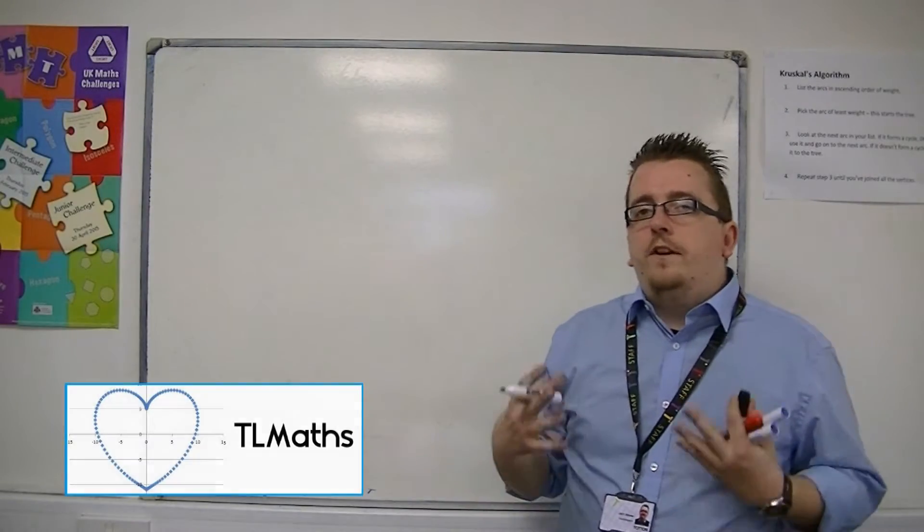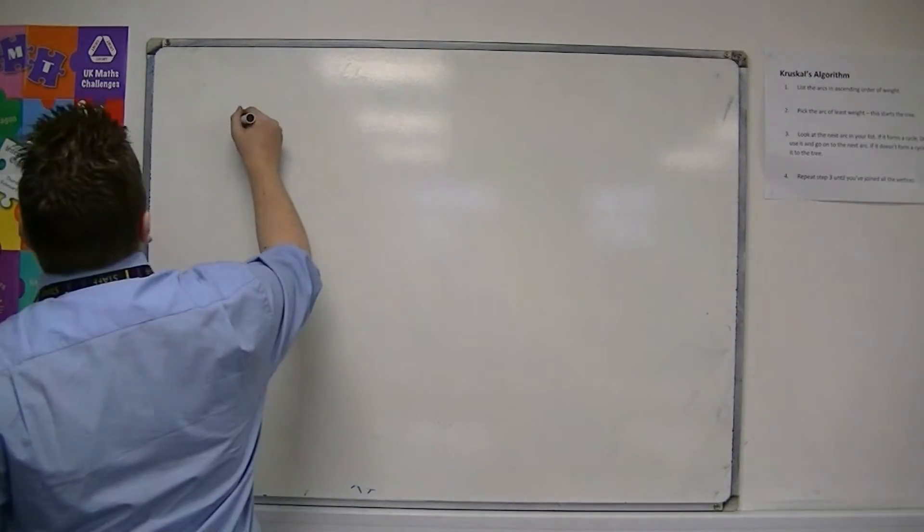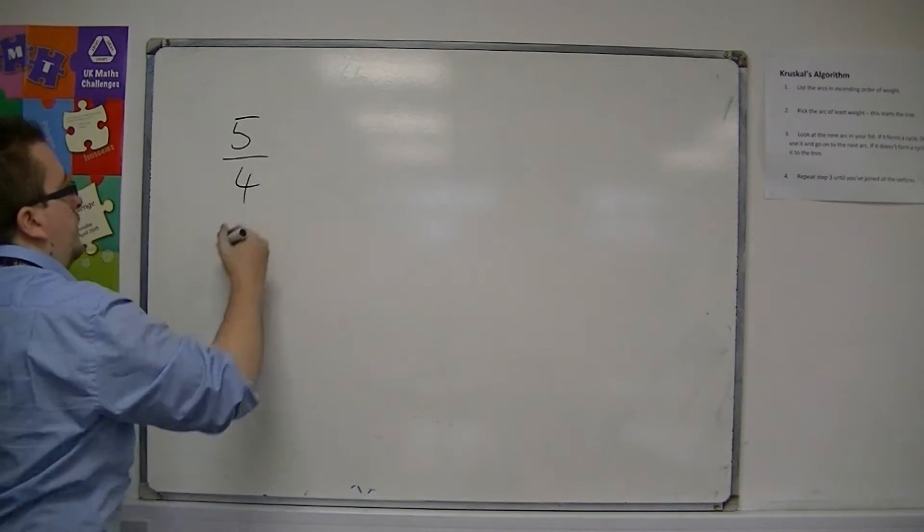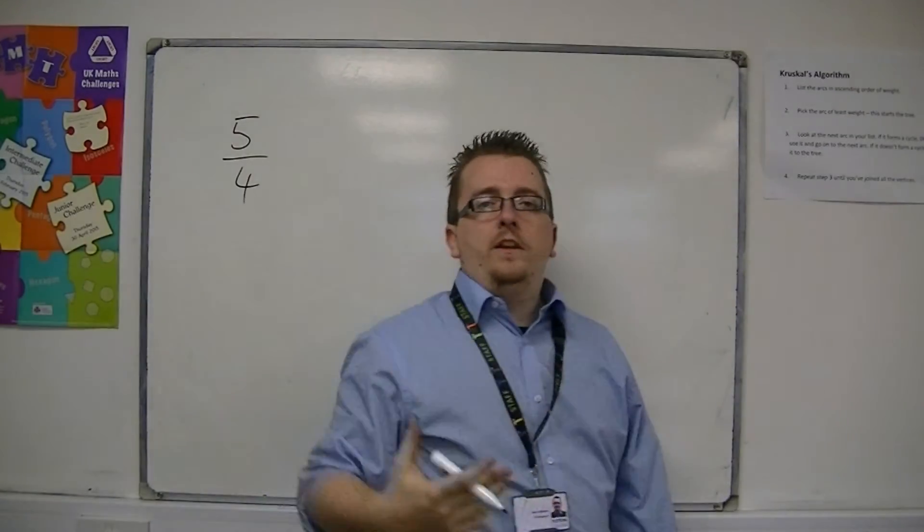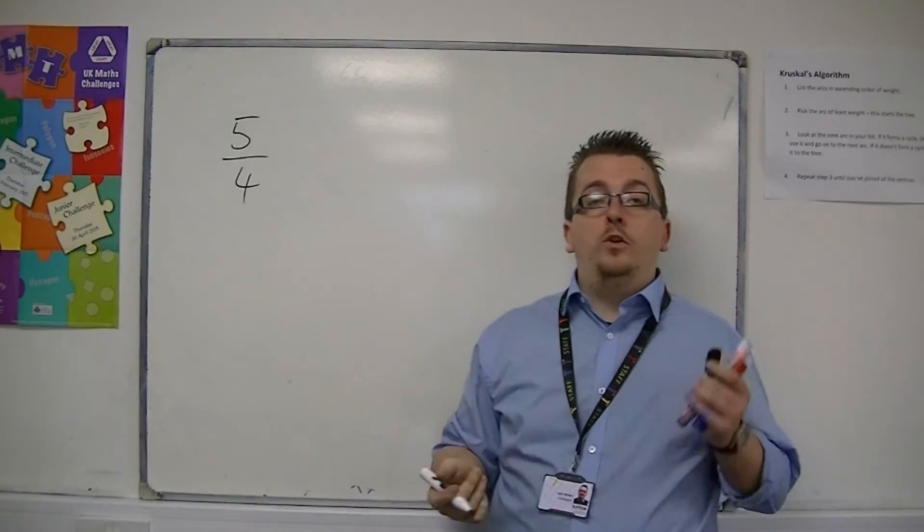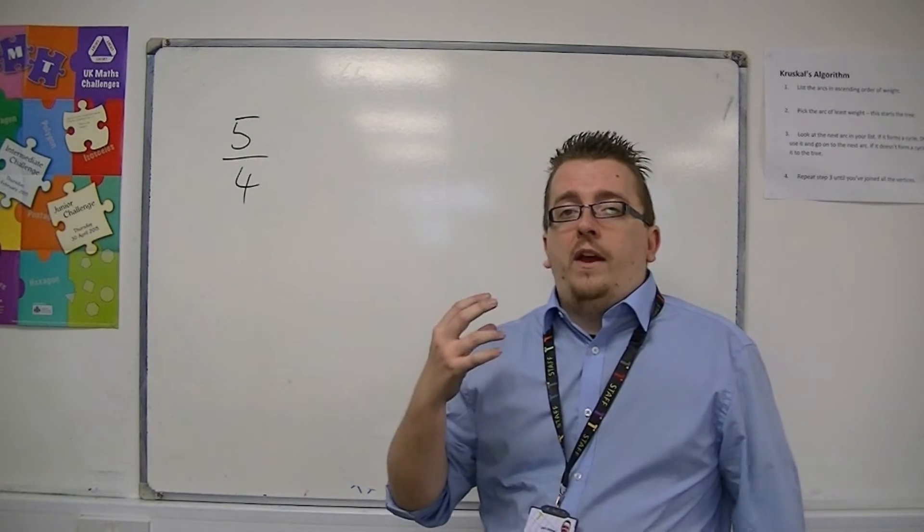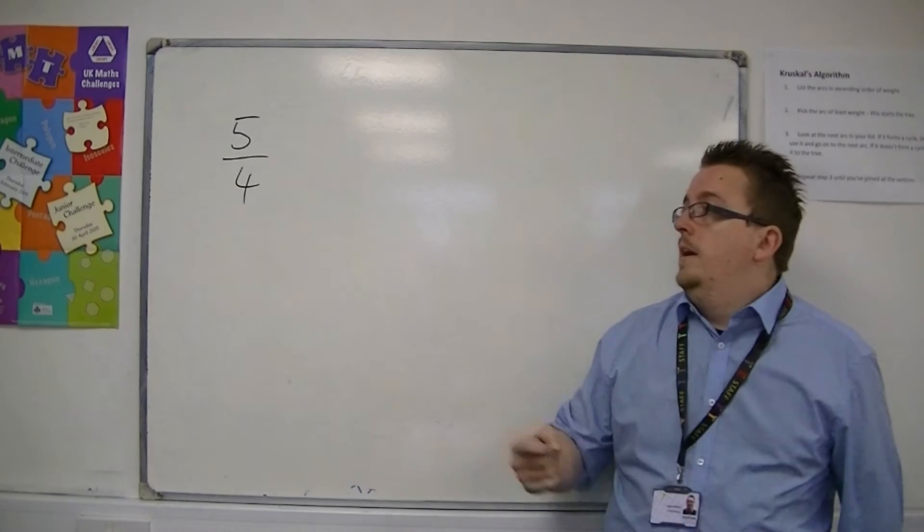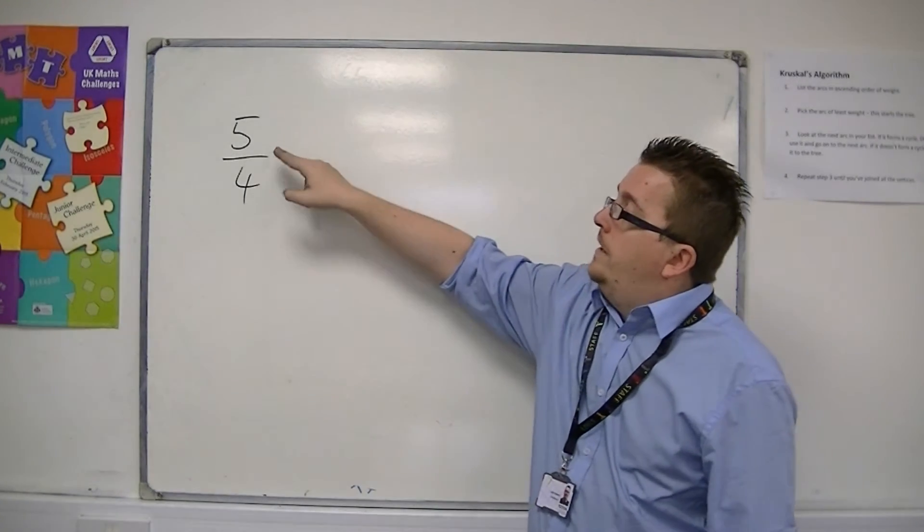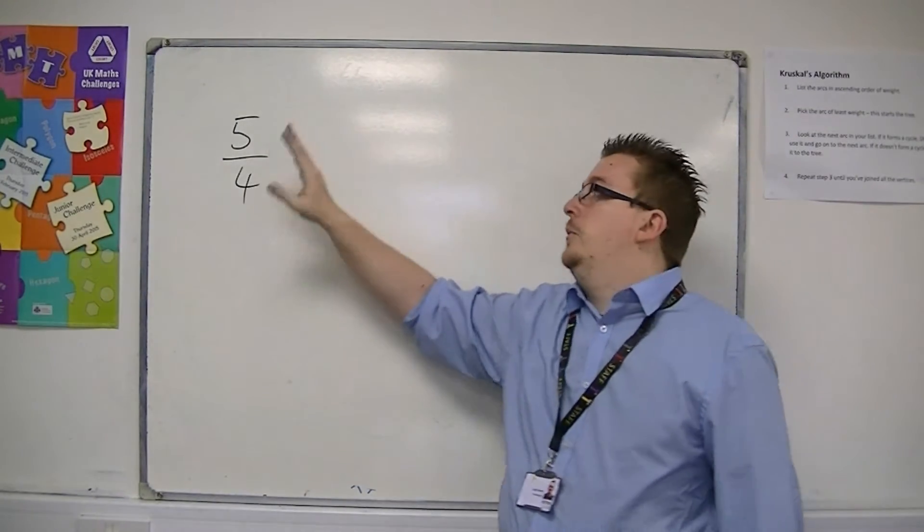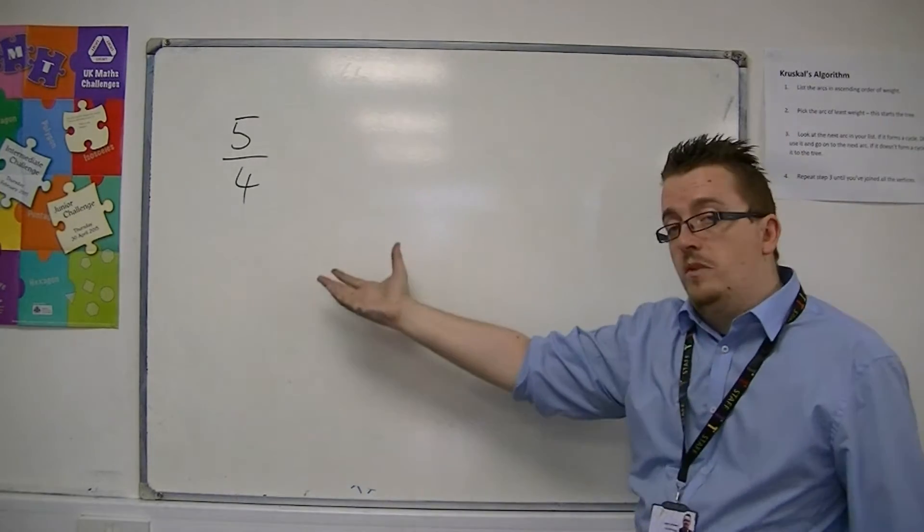Now, if I write down a fraction like 5 over 4, some of you may think of this fraction as being called top-heavy. It's also known as an improper fraction, when the numerator is larger than the denominator. So when the number on the top is larger than the number on the bottom.